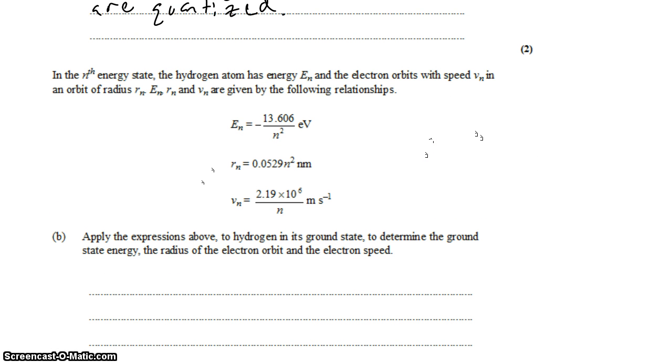In the next part, we're told that the n-th energy state of the hydrogen atom has energy En. It orbits with speed vn with radius rn. And we can calculate each of these three quantities with these three equations based on the shell number, the orbit number.